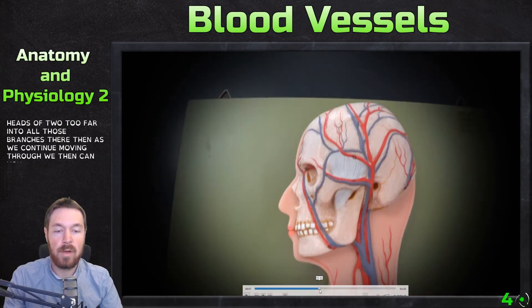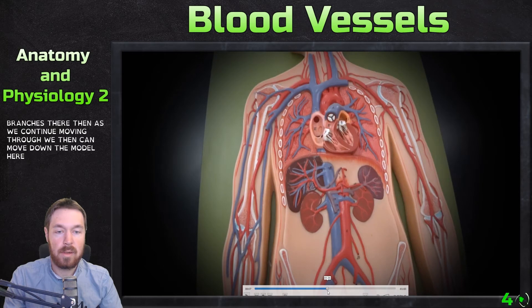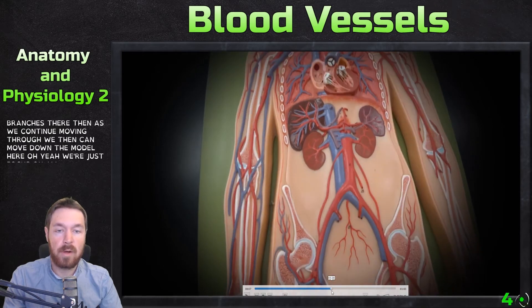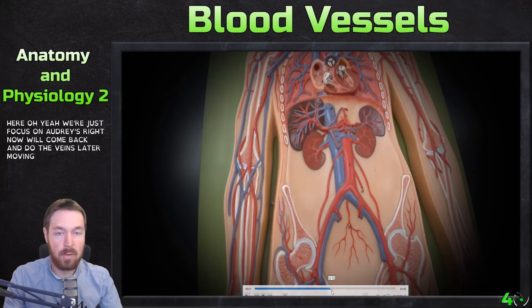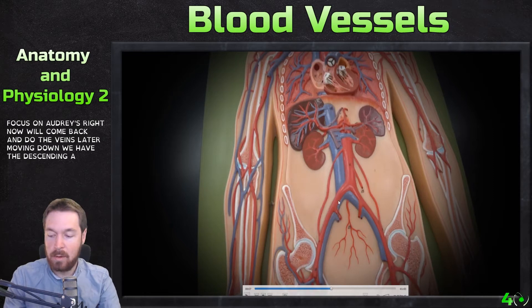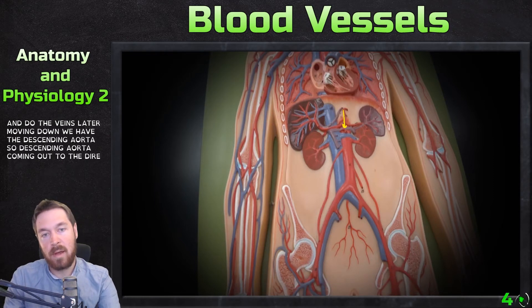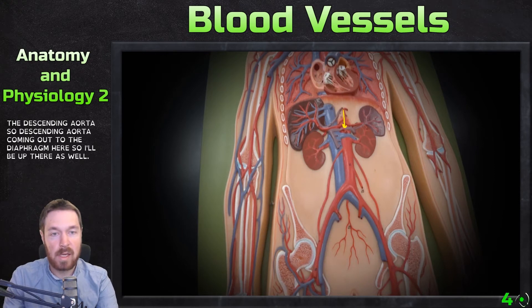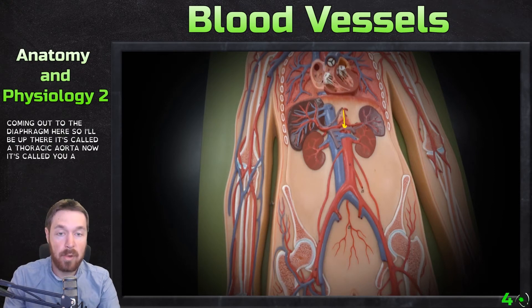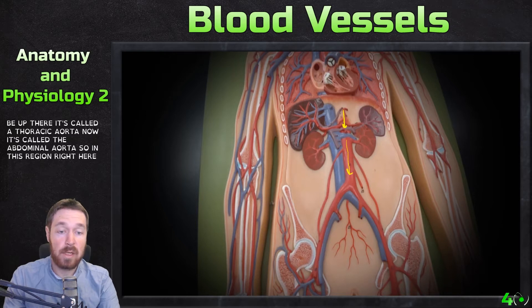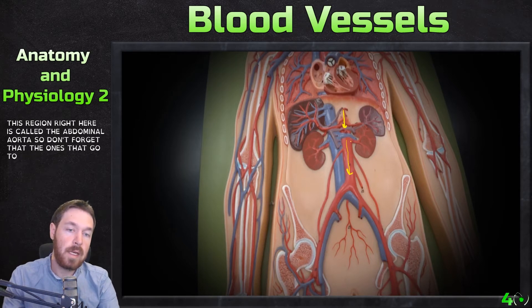Moving down the model — focused on arteries for now, veins later — we have the descending aorta coming through the diaphragm. Above the diaphragm it's called the thoracic aorta; below, in this region, it's called the abdominal aorta.